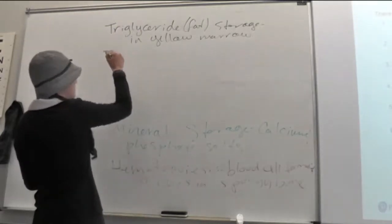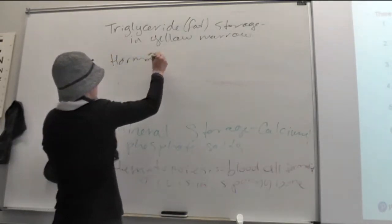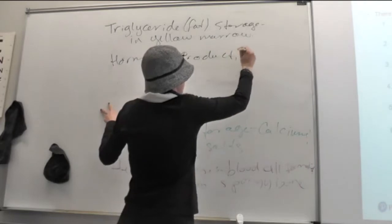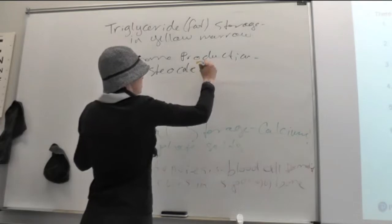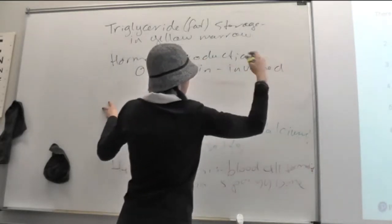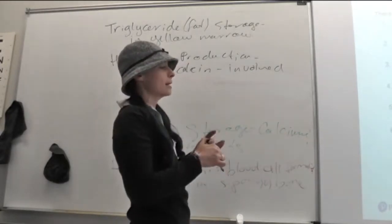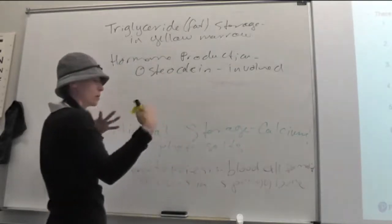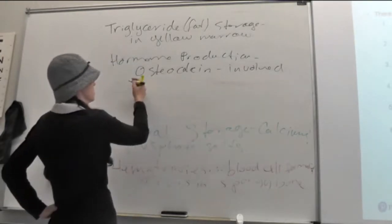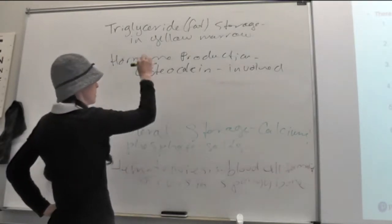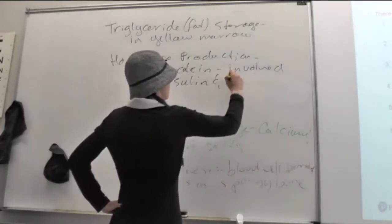And then it also does very, not, this isn't hugely important, but it does some hormone production. This stuff called osteocalcin. And osteocalcin is involved in insulin. It helps with insulin regulation and blood glucose regulation. So, this is really probably more important in kids who are growing and we need to make sure they've got enough glucose availability to fuel that growth. So, this isn't something that we'll talk about even when we go into the endocrine system, but just be aware of it. That osteocalcin is produced by bones and it's involved in insulin and blood glucose regulation.